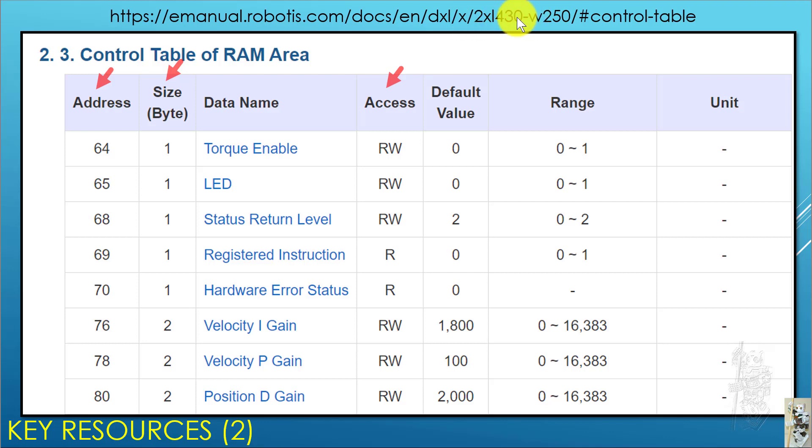The second key resource is the control table of the Dynamixel itself. This is the 2XL430 in the case of the engineering kits one and two. Same thing. We look for the data name, the address corresponding to the size, how many bytes, one or two bytes. And is it read write or is it read only?